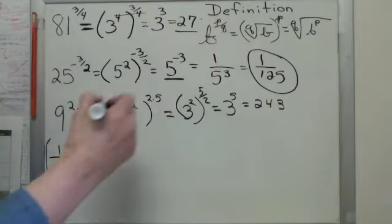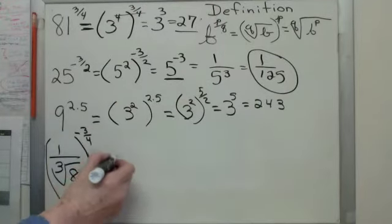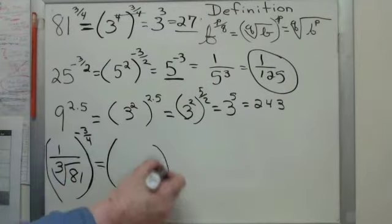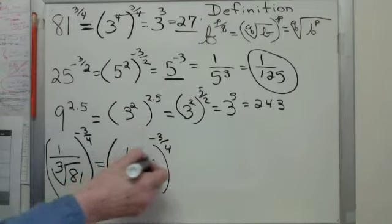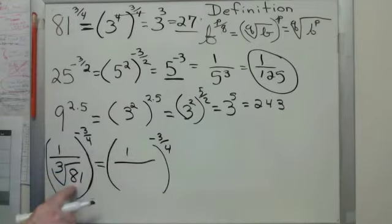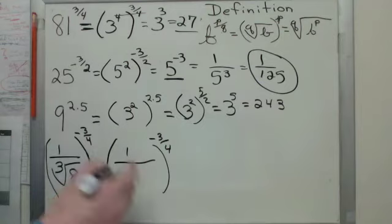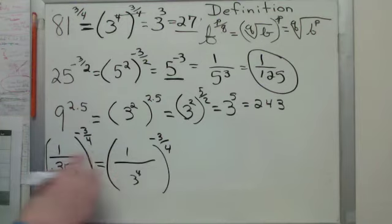That was easy. Alright, here's a trickster one here. Okay, we're going to keep the negative 3/4ths out of the way for a minute and just deal with the inside. How am I going to write that 81? 9 squared or 3 to the 4th? Right, 3 to the 4th.